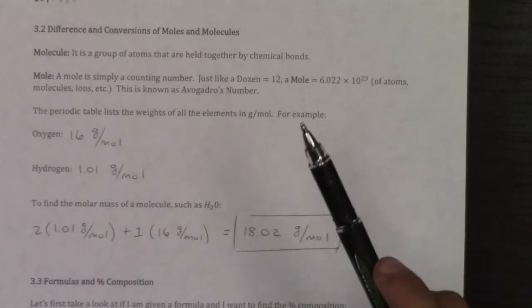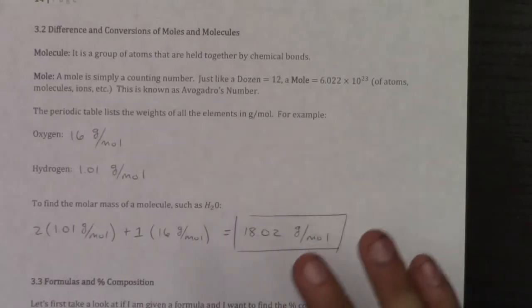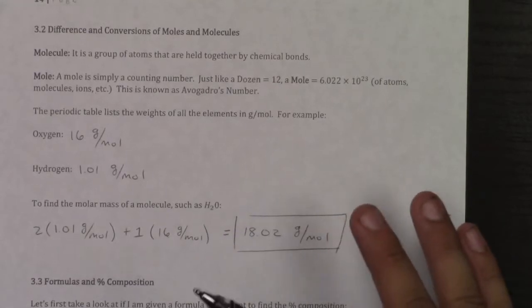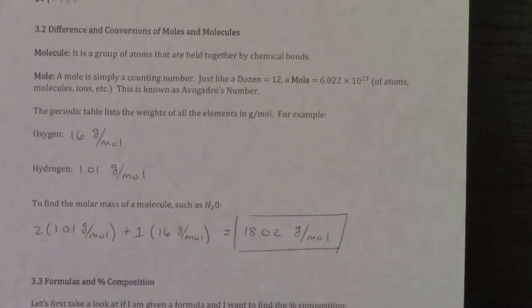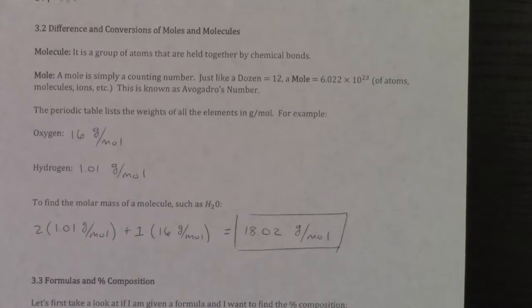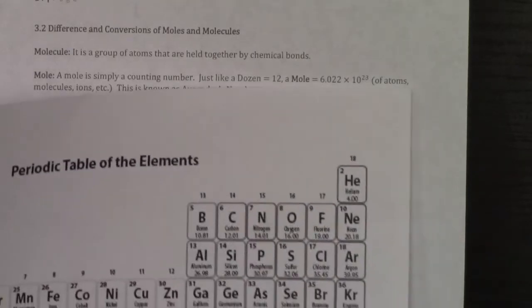A mole is just like a dozen, it's simply just a counting number. That's what a mole is. Now if you look on the periodic table, it lists the weights of the elements in grams per mole.